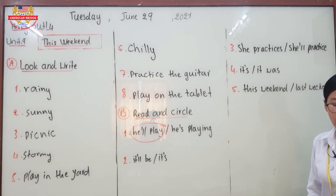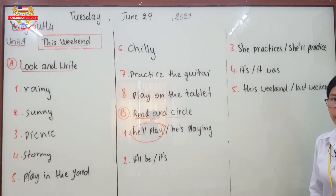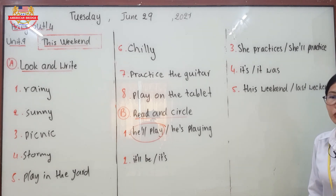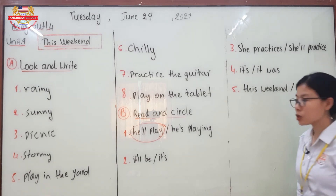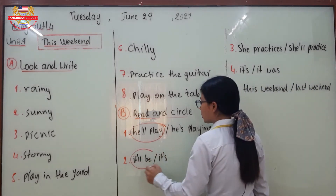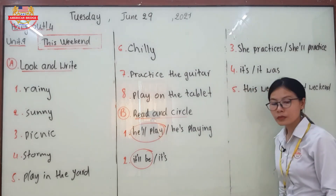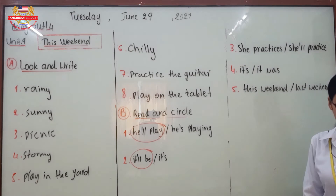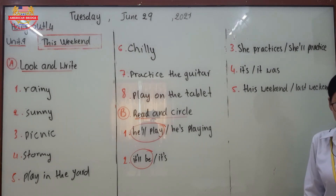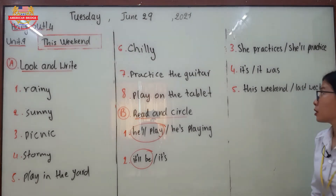Number two: 'If it'll be or it's sunny this weekend, they'll go on a picnic.' Our form for the first conditional should have only present form in the if-clause and future form in the result clause. So the correct answer is it'll be sunny.